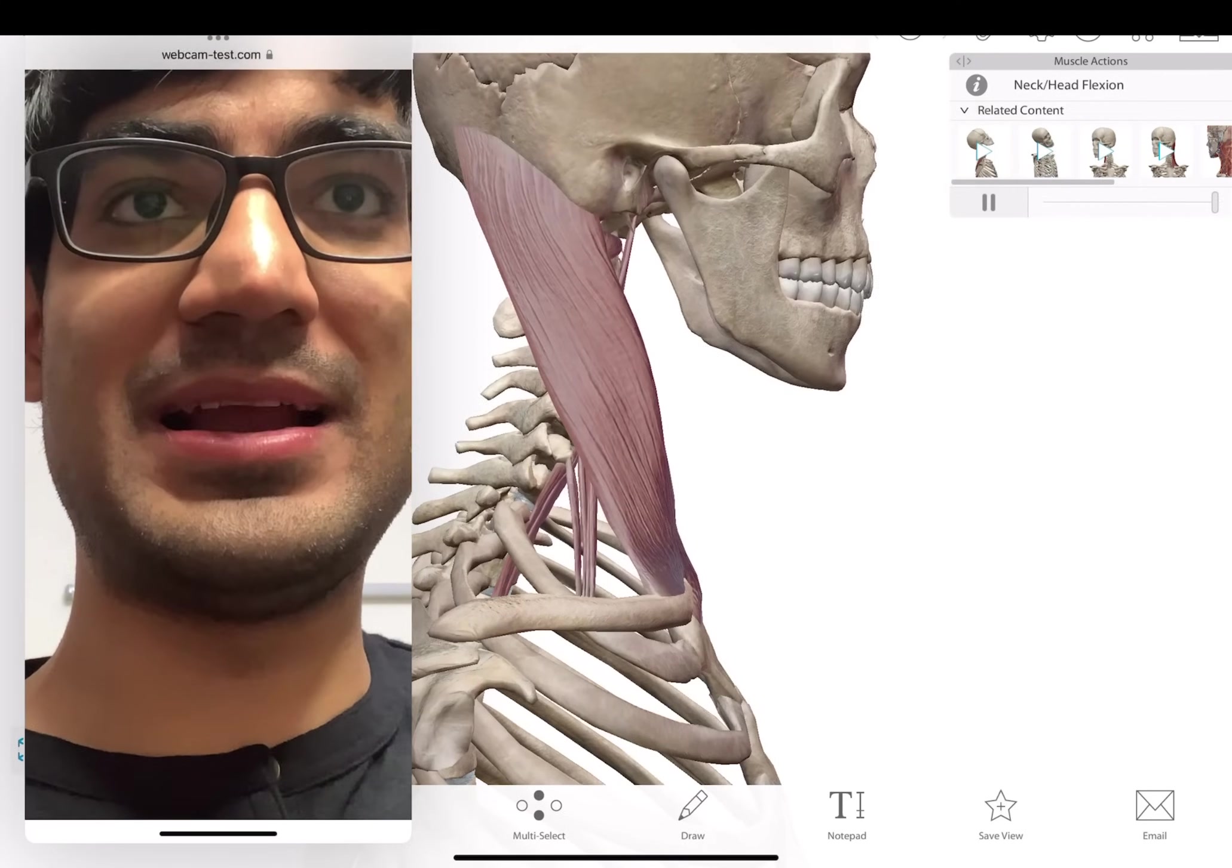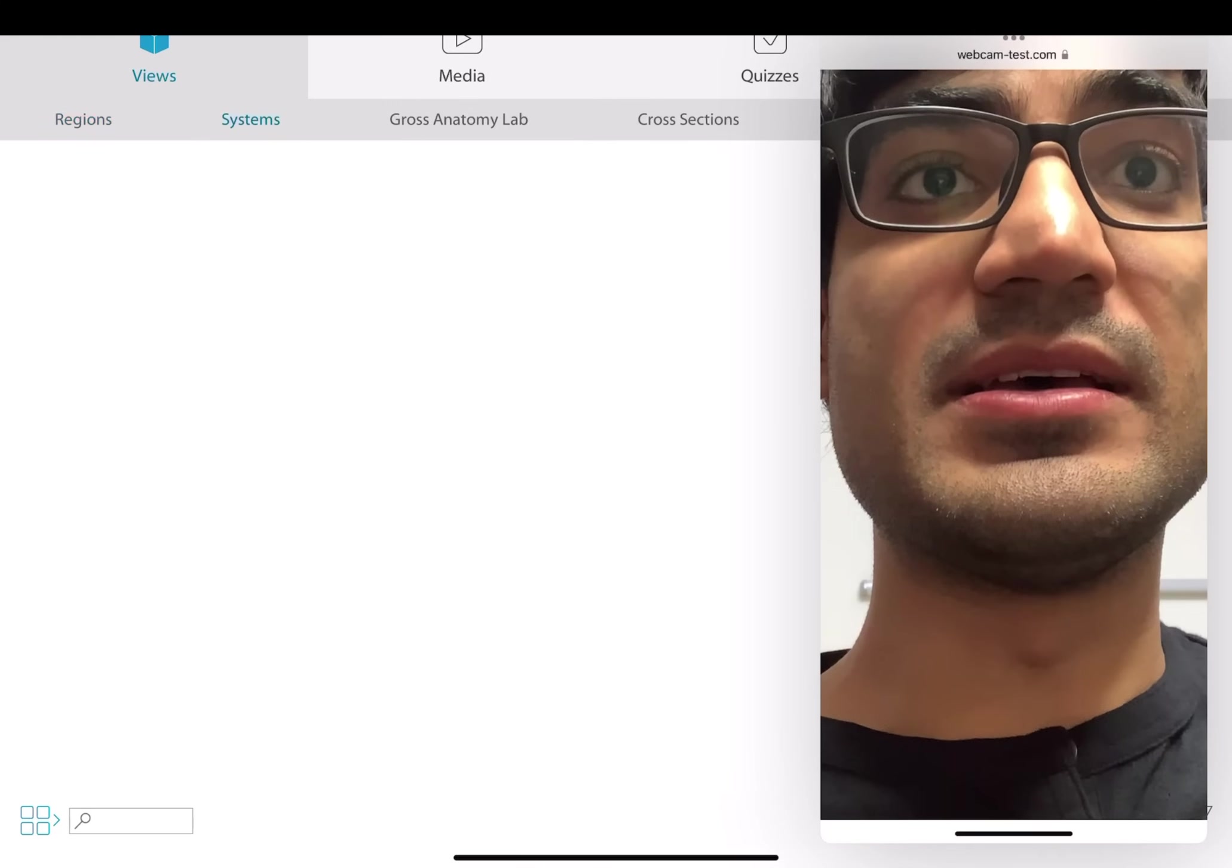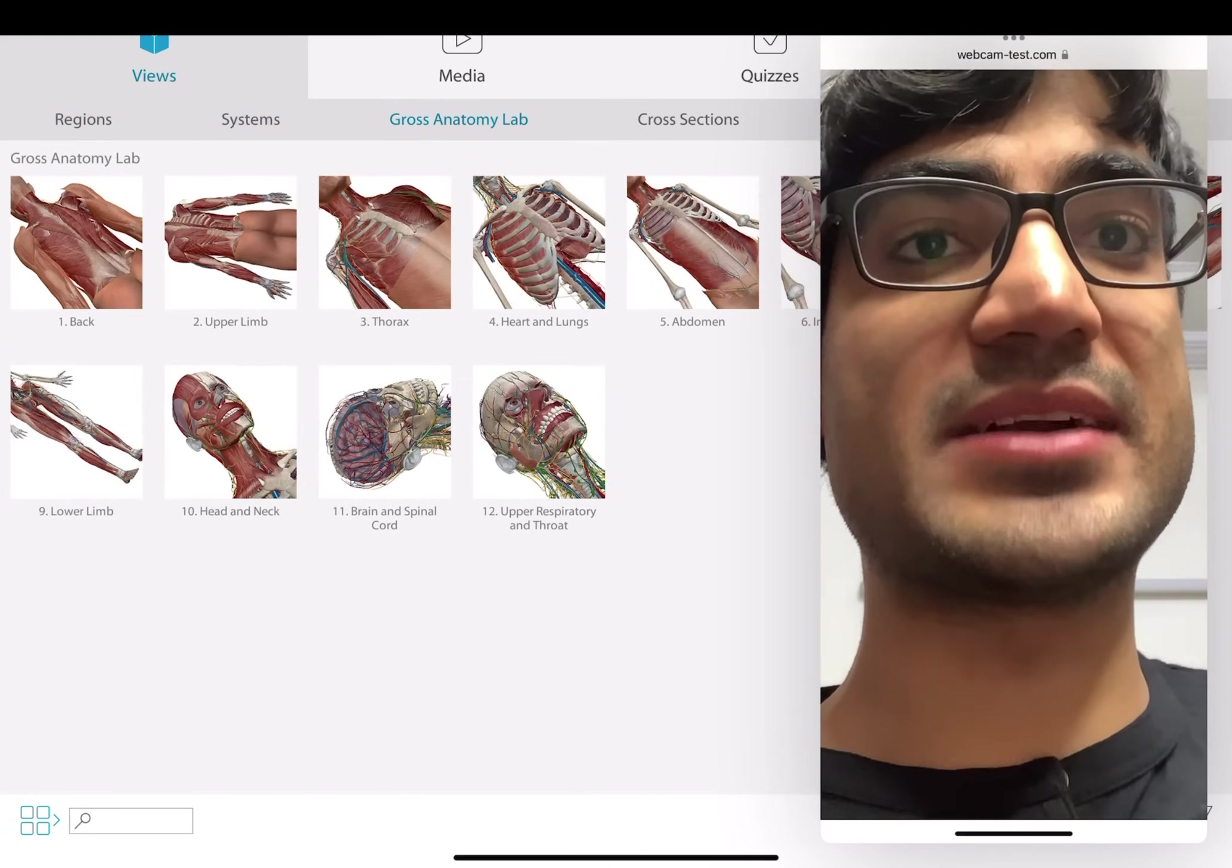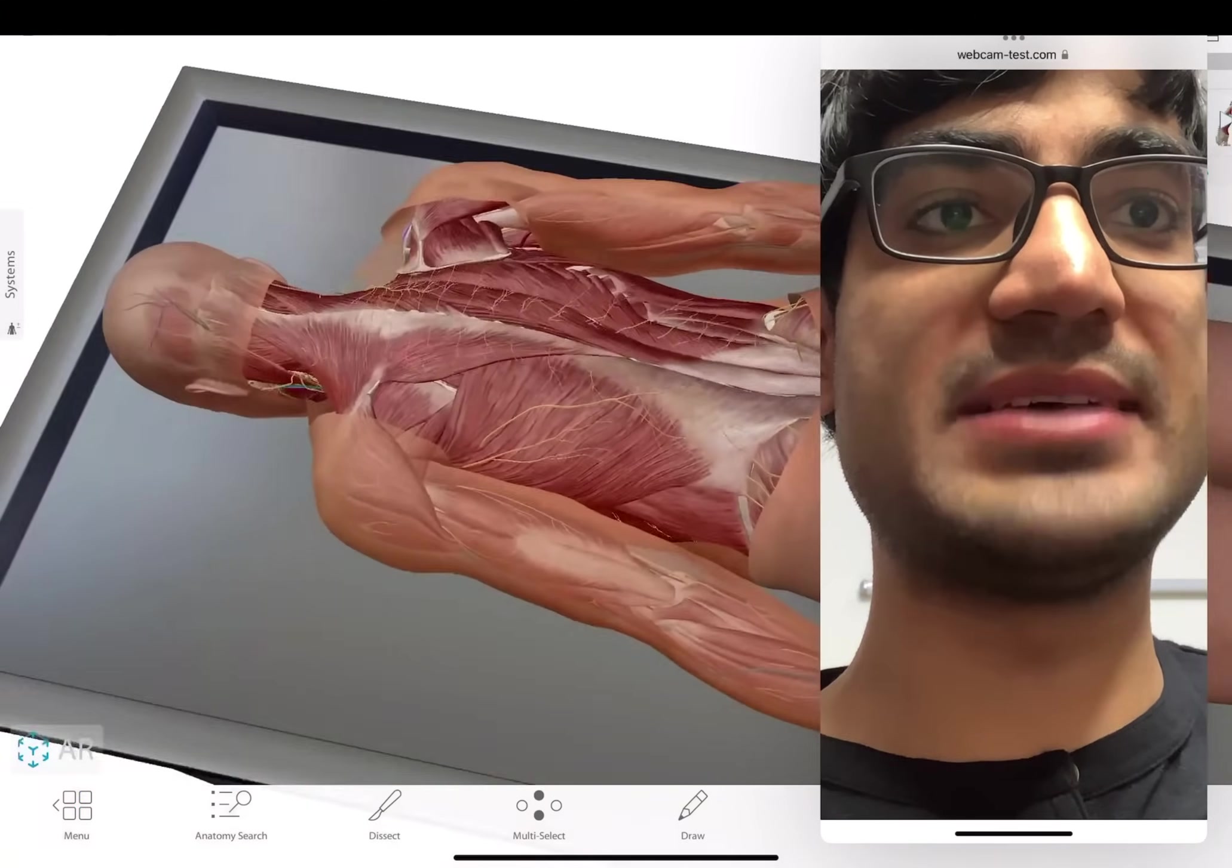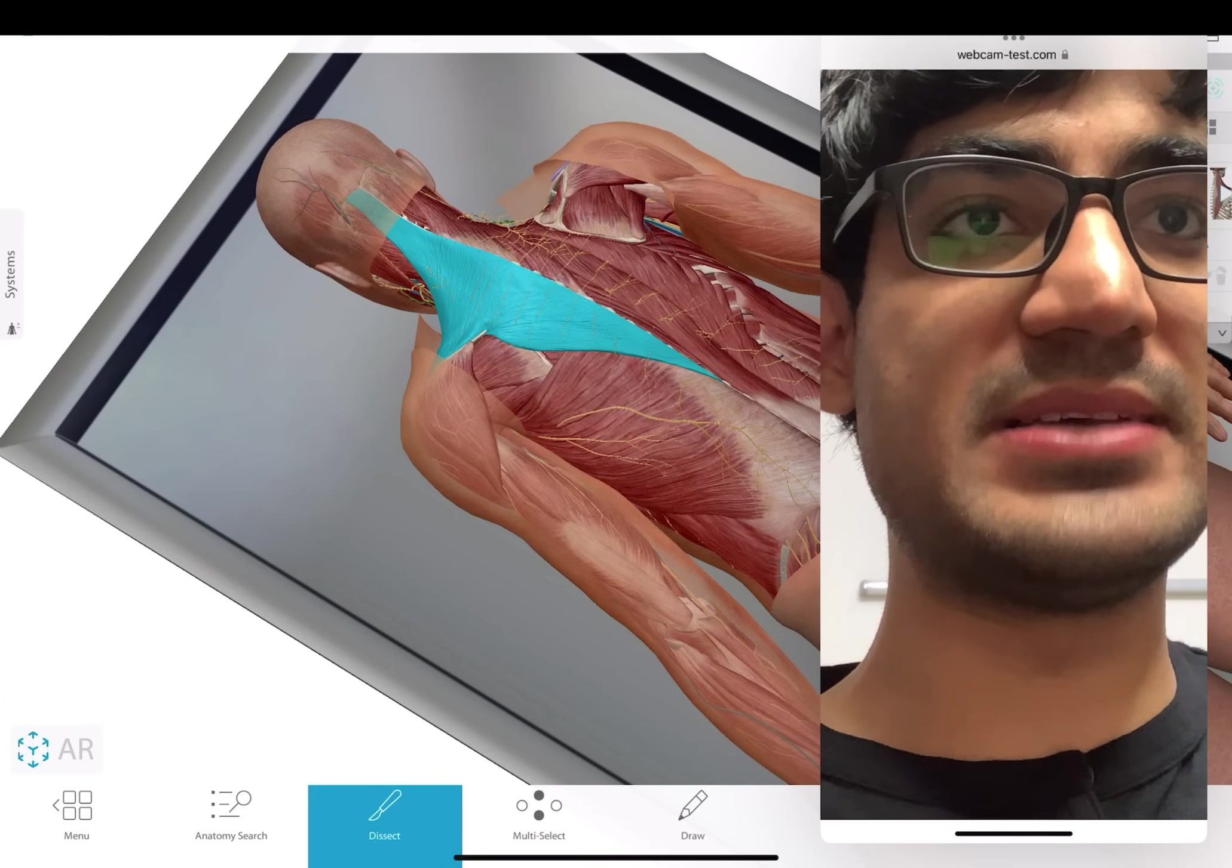Not only that, the other part I like about Human Anatomy Atlas, let me just show you around, is the gross anatomy view where you can even dissect. So you can even dissect things. So let's say you want to dissect the back. The best part about this, let's say we start dissecting.